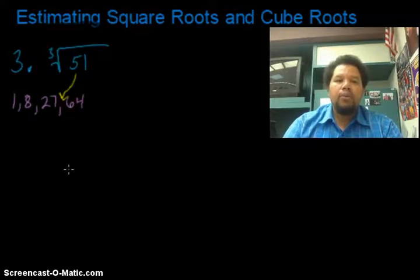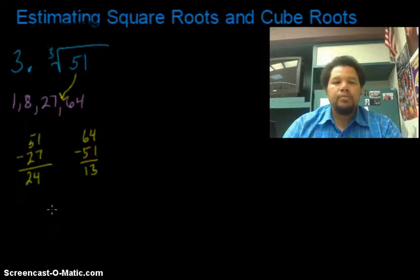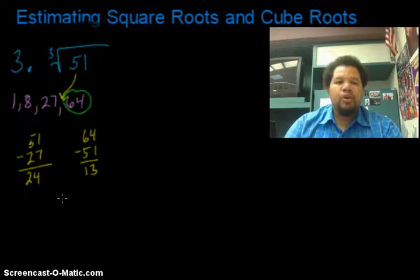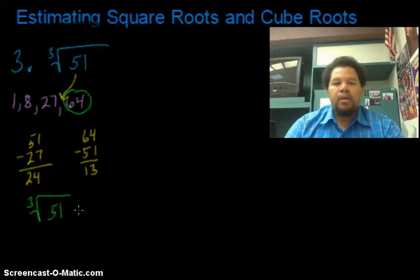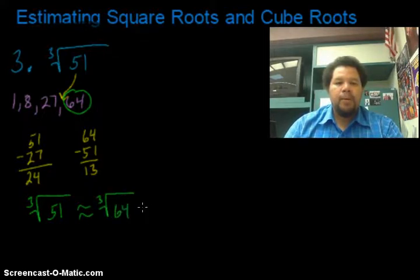So now I got to figure out which one is it closest to. So I go ahead and subtract 51 and 27 to find that it's 24 units away from 27, and subtract 64 and 51 to find out it's 13. So it is closer to 64. So I'm going to go ahead and say the cube root of 51 is approximately the same as the cube root of 64, which is 4.